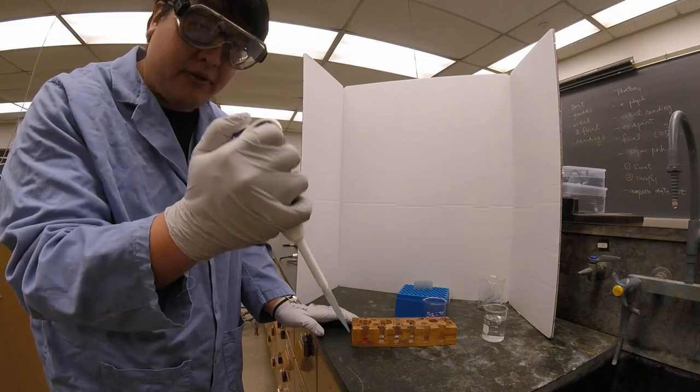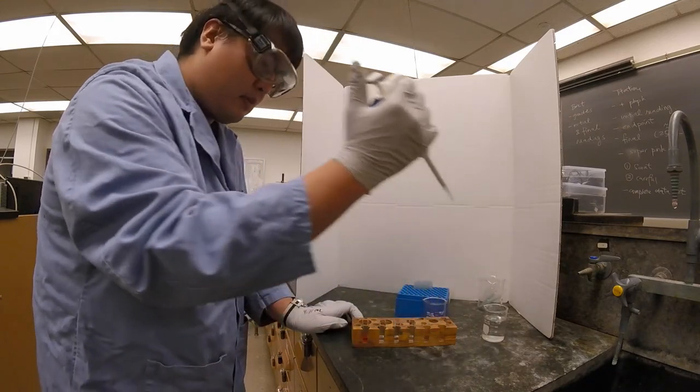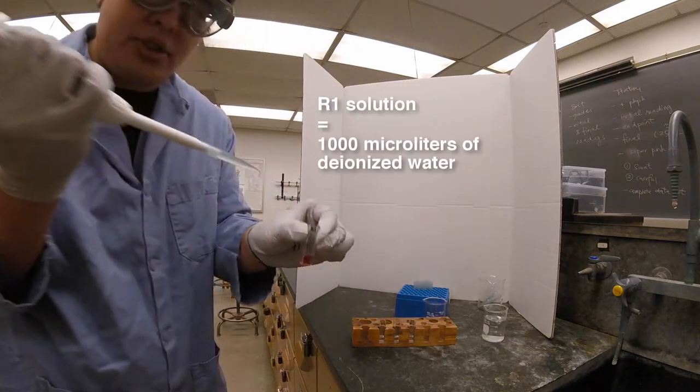So we're going to go down to the first stop, drop some water slowly, and then we're going to add it to R1.